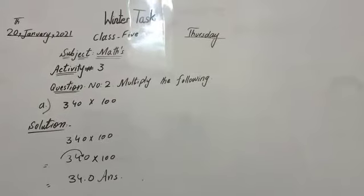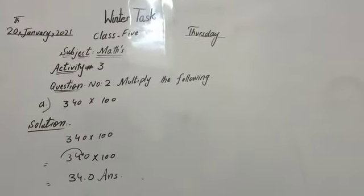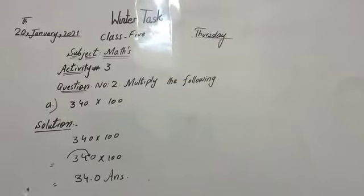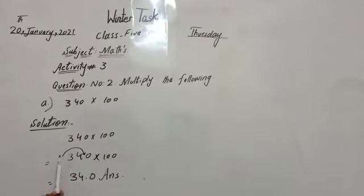Today we will discuss that if you have a question given, then how do you multiply by 100, 1000, and 10. You have question 3.40 multiply by 100. If you have to do a short method,